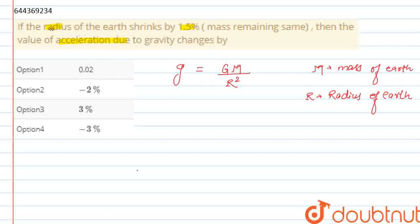Now, in this question, the radius of Earth shrinks by 1.5%. So there will be absolutely a new radius, say it is R prime. So R prime will be equal to R, the original radius, minus 1.5% of R, that is 1.5 upon 100 R.